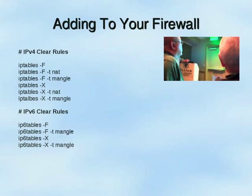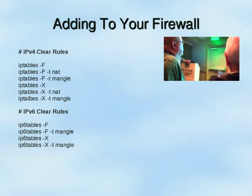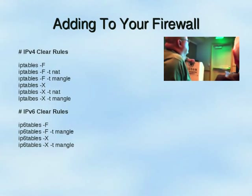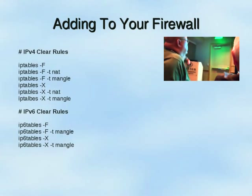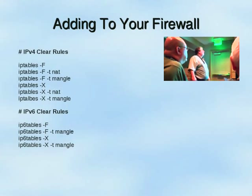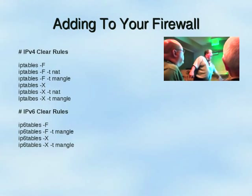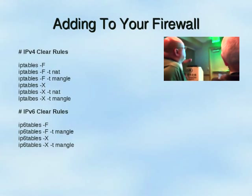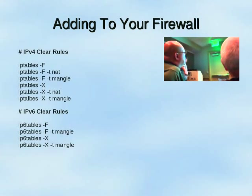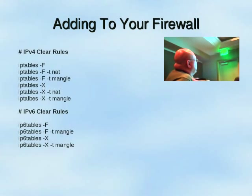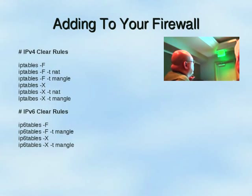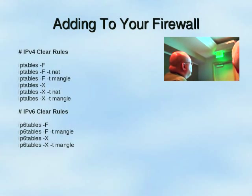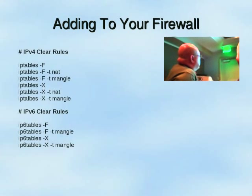For ip6tables, we clear the same rules. The big difference is there is no NAT table in IPv6 — which is great. For IPv6 loopback, we specify each and every interface that runs IPv6. The interface conspicuously missing is ETH0 — because we aren't going to get any IPv6 traffic on ETH0 itself, only in our tunnel that exists on ETH0.